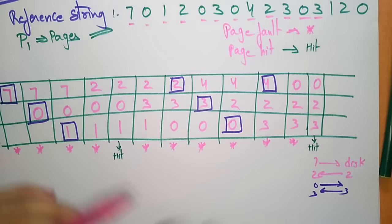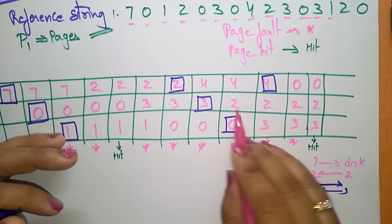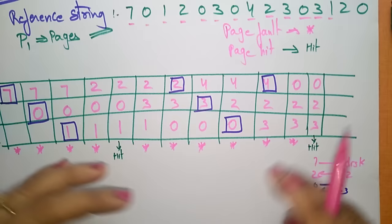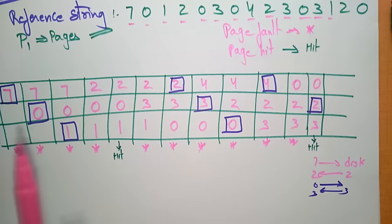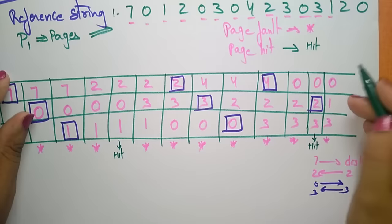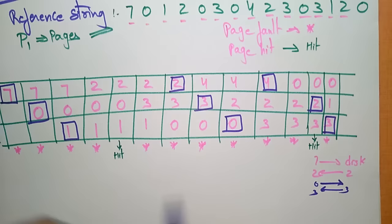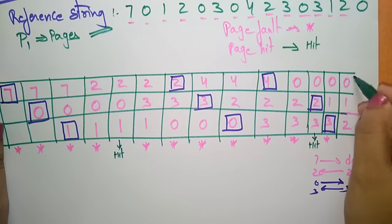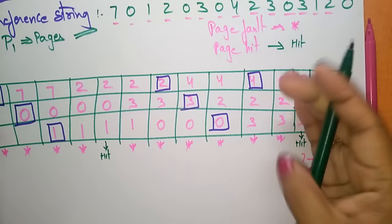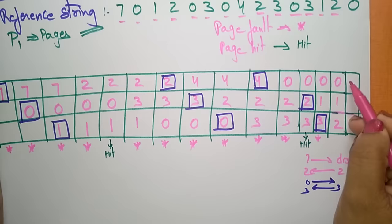Next, page 1 is demanded. The page staying the longest is 2, so 2 is replaced. Frames: 0, 1, 3. Page fault. Next, page 2 is demanded — 3 has been in memory the longest, so replace 3. Frames: 0, 1, 2. Page fault. Finally, page 0 is demanded, and 0 is already present in main memory — this is a hit.